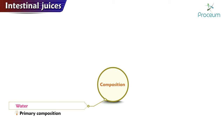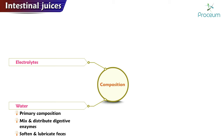The main components of intestinal juices begin with water. Intestinal juices are primarily composed of water, which helps to mix and distribute digestive enzymes and helps to soften and lubricate the feces. They also contain various electrolytes including sodium, potassium, and chloride, which play important roles in maintaining fluid balance and electrolyte balance in the body.